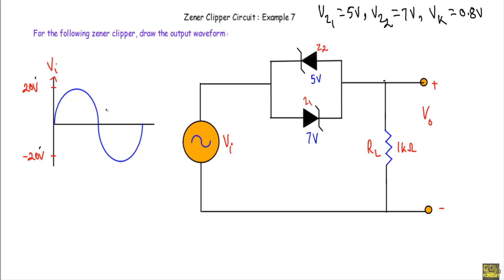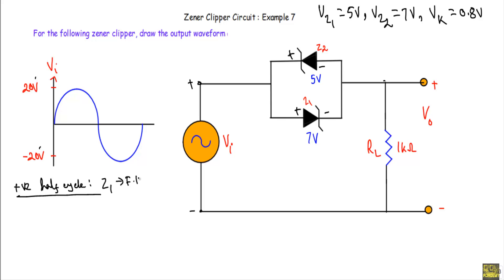Consider the positive half cycle. During the positive half cycle, this terminal will be positive and this terminal will be negative. The positive terminal of the applied voltage will be connected with the p-side of Z2, and the negative terminal will get connected with the p-side of Z1. As a result, the input is trying to put diode Z1 in forward bias and Z2 in reverse bias during the positive half cycle.